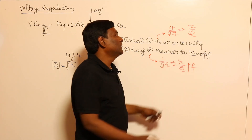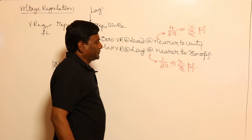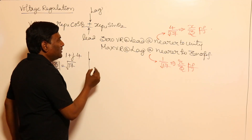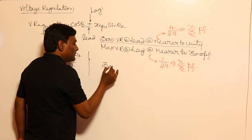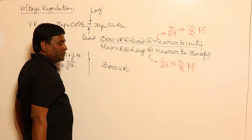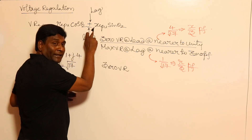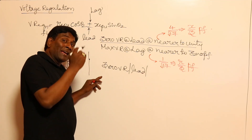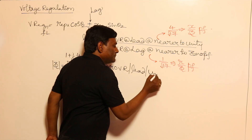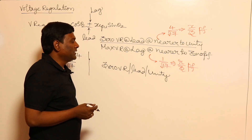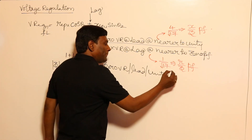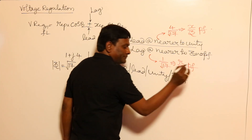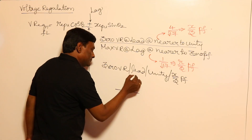For zero voltage regulation at leading power factor nearer to unity, the power factor is X/Z. Drawing the impedance triangle: if cos(θ₂) = X/Z (adjacent over hypotenuse), then the opposite side is R, so θ₂ = tan⁻¹(R/X). This gives the exact load power factor angle at which zero voltage regulation occurs.